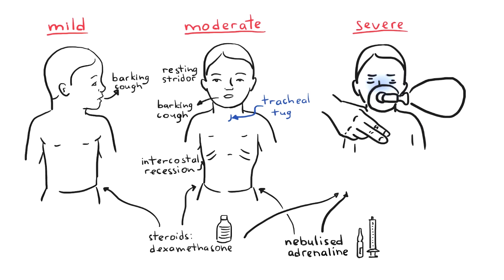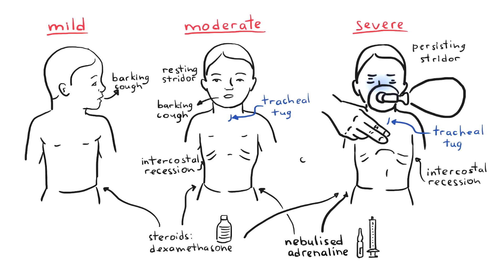Severe airway obstruction presents with all the signs and symptoms mentioned earlier. The stridor is persisting and the child is usually very apathetic or restless, with marked tracheal tug and chest wall recession. Severe stridor requires oxygen, steroids, and nebulised adrenaline to open up the airways. Soft stridor, irritability, tachycardia, and pallor indicate imminent airway obstruction.